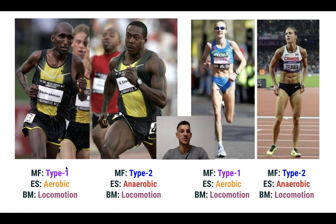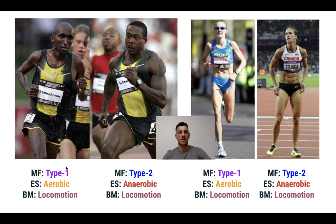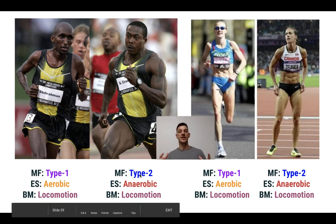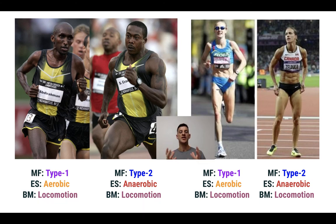When you use the aerobic energy system, you're using type 1 muscle fibers, which are our smaller, slow-twitch muscle fibers. Whereas the sprinter uses predominantly type 2, fast-twitch, really strong, really big muscle fibers. The more you use them, the more the body will adapt to express them.